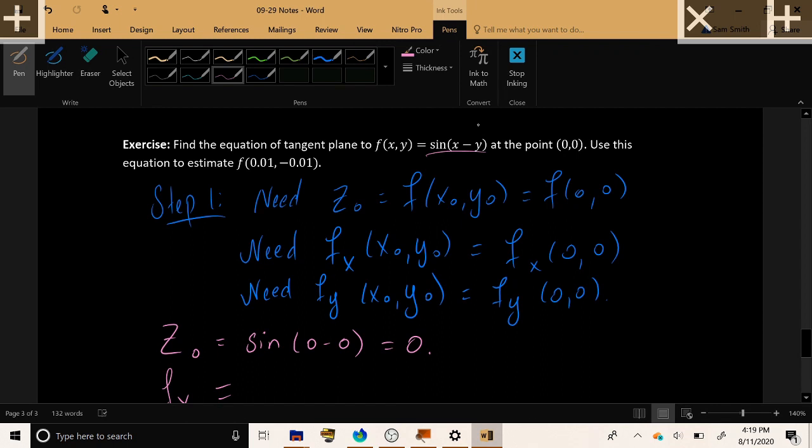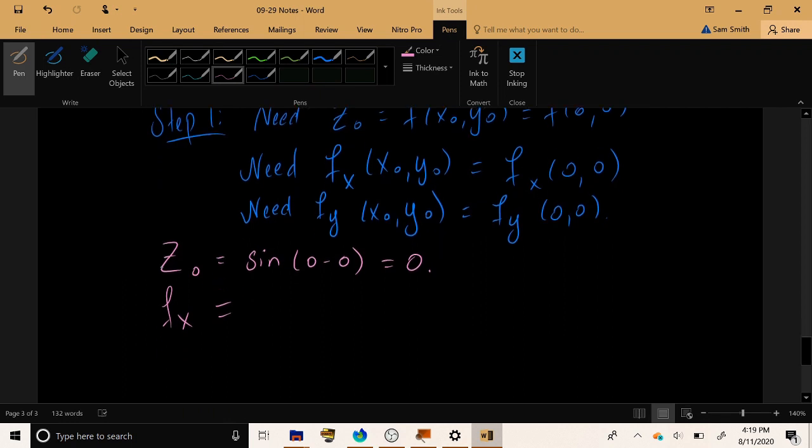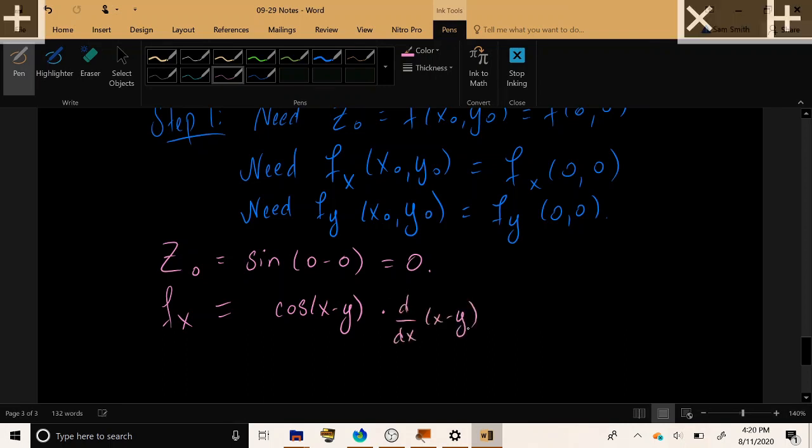Now we have an outer function of sine, whose derivative is cosine, and then we multiply by the derivative of the inner function, and since y is constant, it vanishes. The derivative with respect to x is simply 1, and we get cosine x minus y.